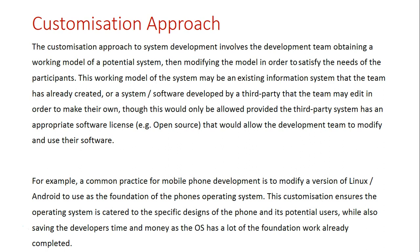Alternatively, they may look at third-party developers and find a similar piece of software that they can either purchase from that developer, or look for an open-source licensed piece of software that allows you to edit its source code. They can then use that and customize it to meet the requirements for the information system they're going to be developing.